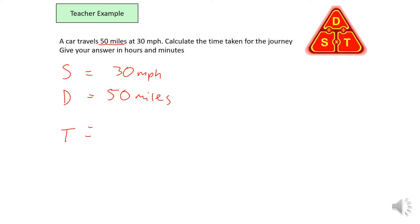Calculate the time taken for the journey. Give your answer in hours and minutes. So we need to work out time. I'm going to cover up time. So time equals distance divided by speed. Our distance is 50 and our speed is 30. So that gives me 1.666 recurring. So it should just be 1.6 recurring hours.